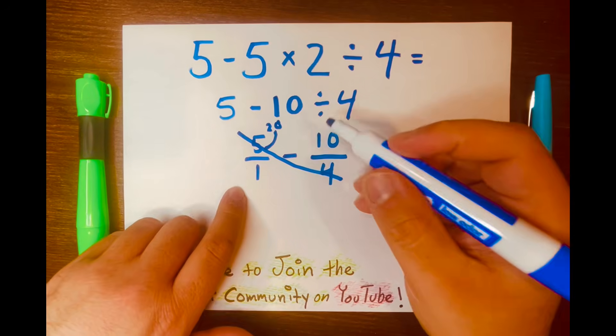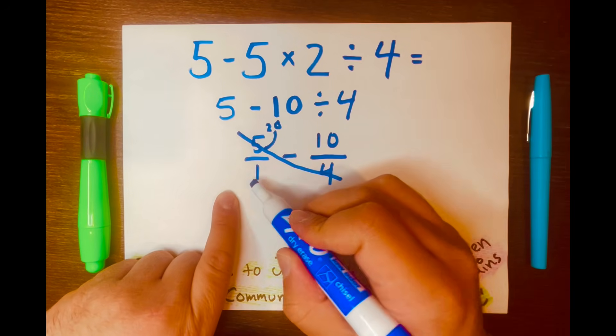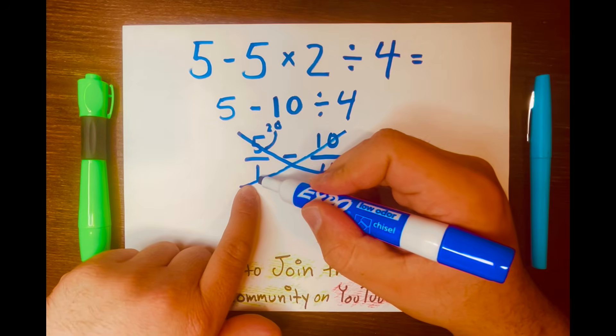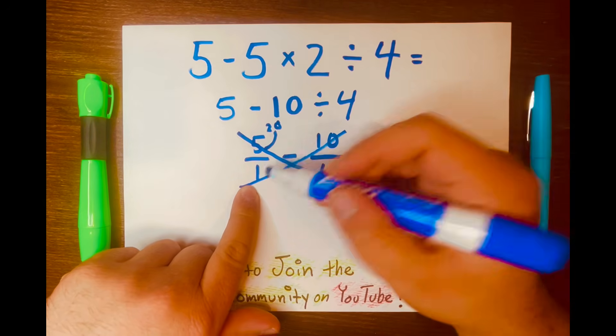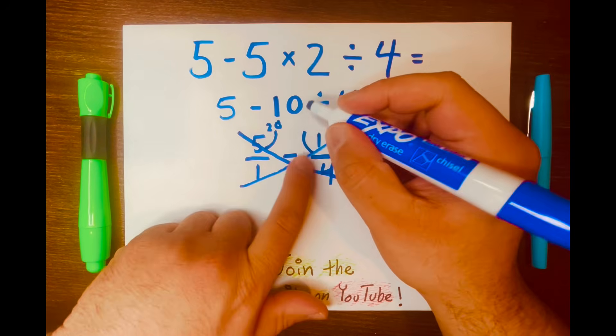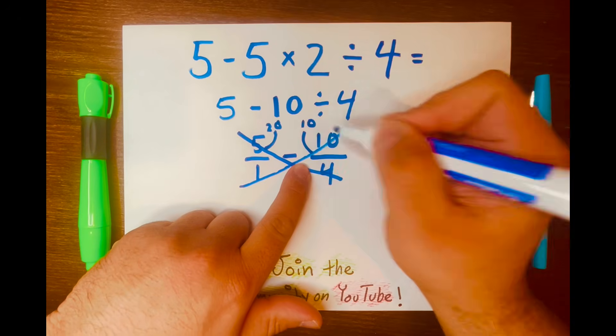Next, we draw the next wing like this. And we multiply 1 times 10 or 10 times 1, which equals 10. So I'll draw the second antenna and write the 10 right here.